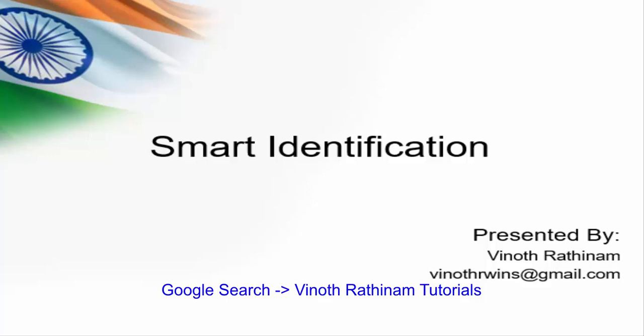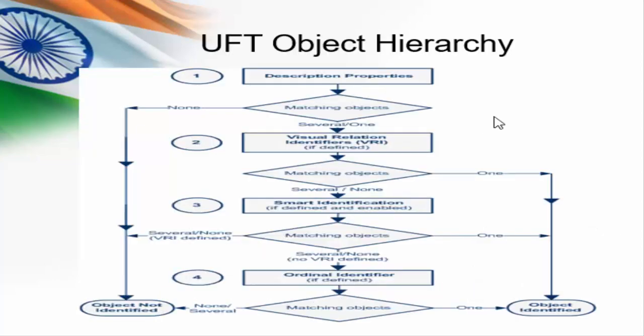Hello everyone, welcome to Vinod Rathinam tutorials. Today we are going to learn about smart identification. This is another feature used for object identification. Till now we have completed the description properties, VRI, and ordinal identifier. In this session we are going to see smart identification.